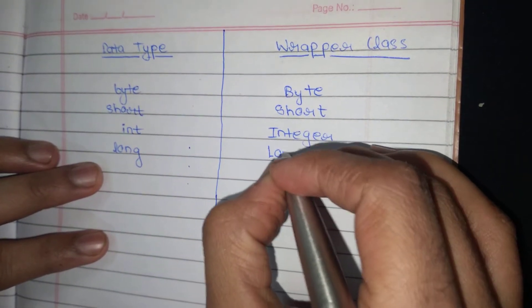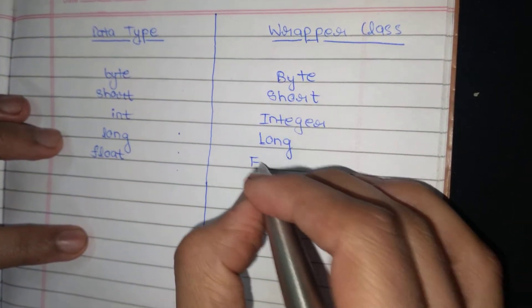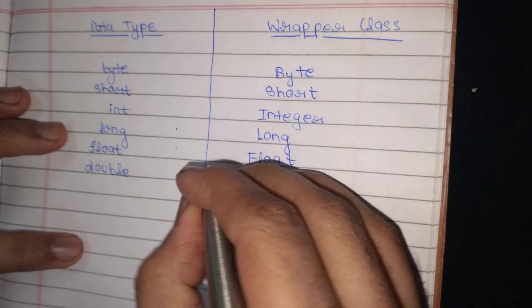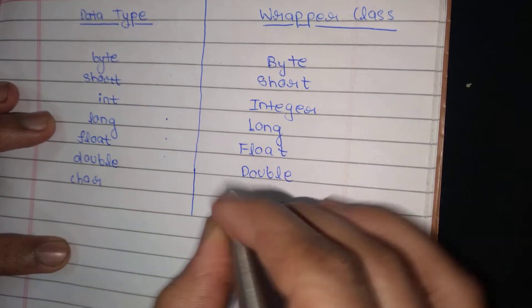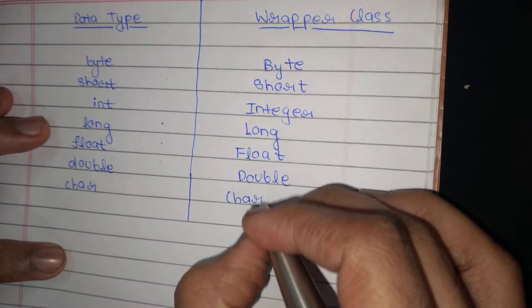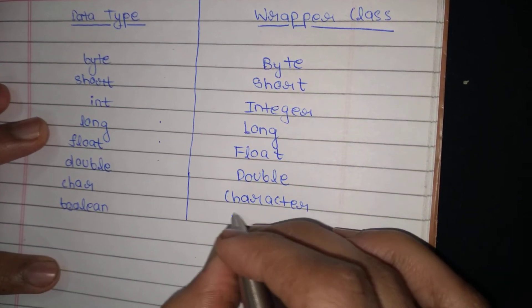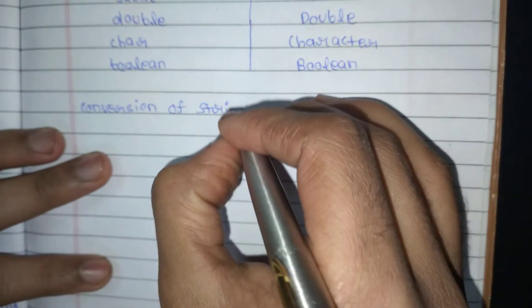For long, L is capital in the wrapper class. Then float — in the primitive type f is small, and in the wrapper class F is capital. Then double — d is small in the primitive and D is capital in the wrapper class. Then char — here the full name Character is written. Then boolean — with small b for primitive and capital B for the wrapper class Boolean.